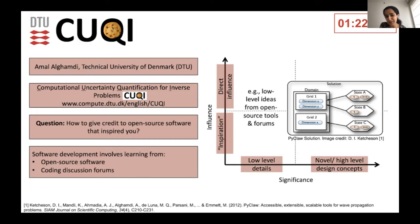One way to look at this kind of influence and inspiration may be to look at how significant these ideas affect us and our development, and what is the level of influence. From the significance point of view, we can be influenced by low-level details like implementation of a particular functionality, or influenced by a high-level or novel concept — for example, the design of a particular set of classes and their relation to each other in an object-oriented regime.